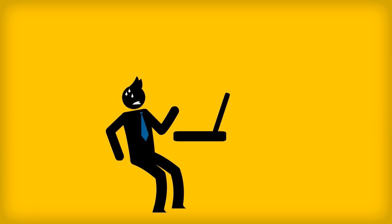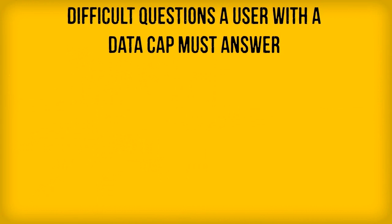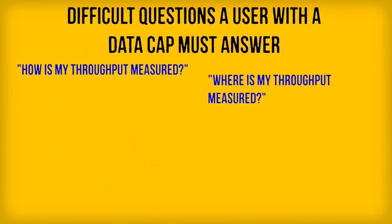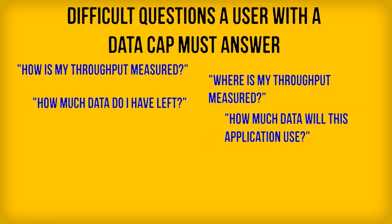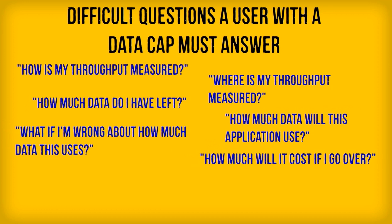When you suddenly add an additional charge based on the amount of data transferred, a lot of that reassurance goes right out the window. You make the user answer a bunch of questions they didn't have to deal with before — like: how is my throughput measured? Is it at my end or at my ISP's end? How much data do I have left before I get hit with fees? How much data will what I'm about to do actually use?